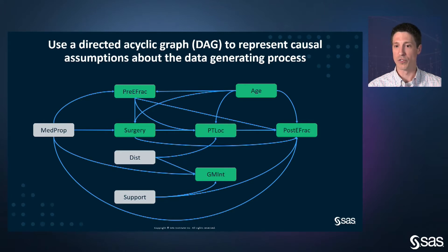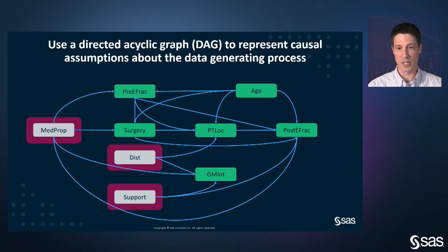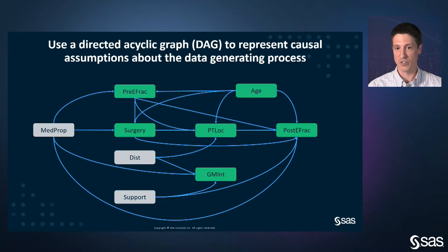Note that not all variables appearing in the graph need to be included in the available data. For example, a patient's receptiveness to medical care and measures of family or community support are latent constructs that are difficult or impossible to measure. Other variables, such as the distance from the patient's home to the hospital, could be measured but are not included in the available dataset. There are two advantages to using a graph to represent the data generating process. First, the graph provides a transparent method of sharing your causal assumptions. Second, the structure of the graph determines which variables you should include for adjustment when you estimate the causal effect — this is the purpose of PROC CausalGraph.